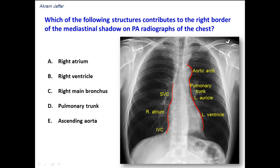Now, let's go back to the question and see the options. Which structure contributes to the right border of the mediastinal shadow? We have just seen that the structures here are the superior vena cava, the right atrium, and the inferior vena cava, so the right atrium is correct.